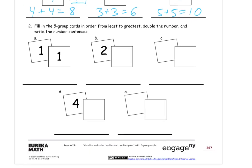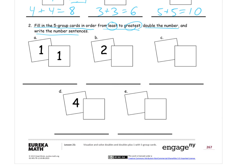Number 2. Fill in the 5 group cards in order from least to greatest. Least is the smallest and greatest is the largest. So we're going to work up from 1. And then double the number and write the number sentences. It's a little bit like what we just did. But now we're going from least to greatest. So our first one here, A, we have both the cards already. We have 1 plus 1. 1 plus 1 equals 2.